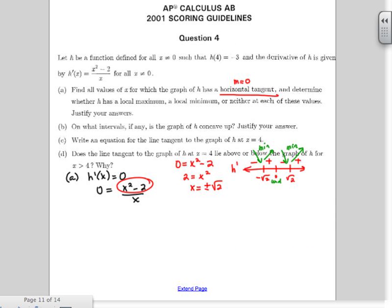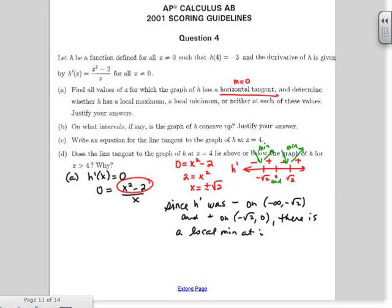We're going to say since h prime was negative on negative infinity to negative root 2 and positive on negative root 2 to 0, there is a local min at x equals negative square root of 2.